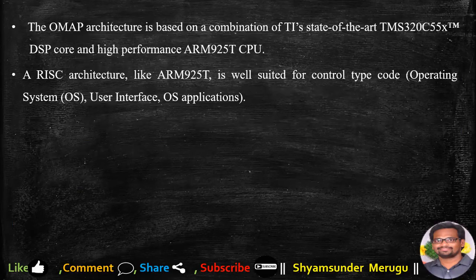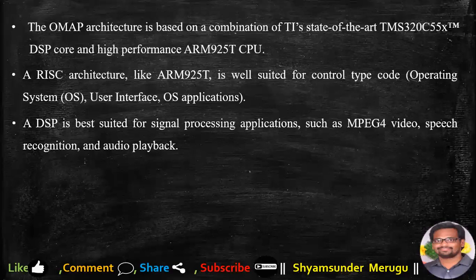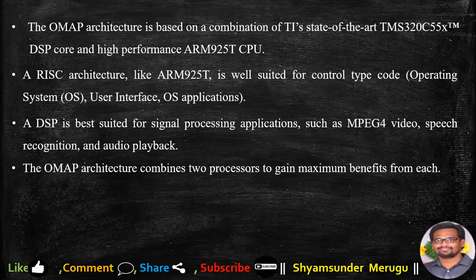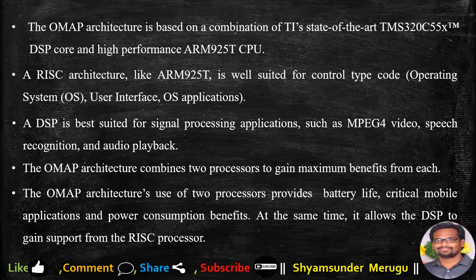A RISC architecture like ARM 925T is well suited for control-type code, operating system, user interface, and OS applications. A DSP is best suited for signal processing applications such as MPEG-4 video, speech recognition, and audio playback. The OMAP architecture combines two processors to gain maximum benefits from each. The OMAP architecture's use of those two processors provides battery life, critical mobile applications, and power consumption benefits.